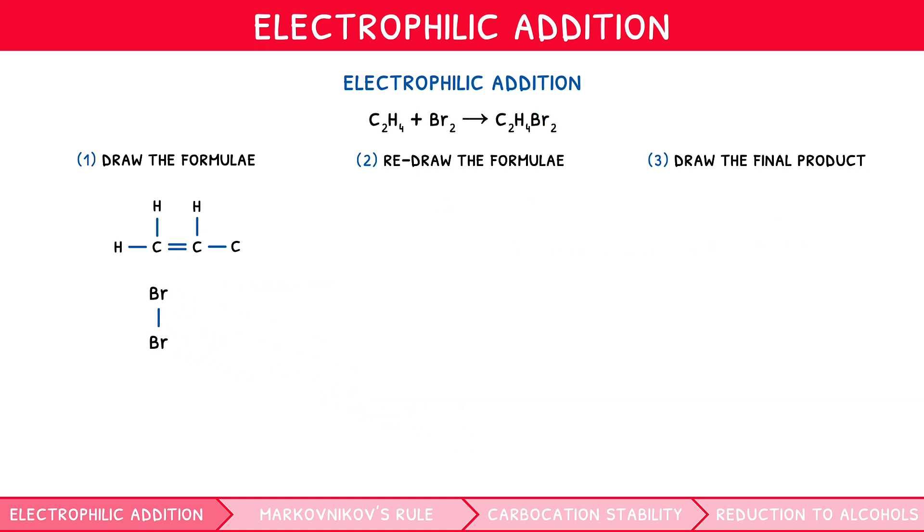Well, let's consider ethene reacting with diatomic bromine. As the halogen approaches the double bond, the higher electron density pushes the electron density of the interhalogen bond towards the furthest halogen, inducing a dipole. We can signify this using a dotted arrow alongside the interhalogen bond. This allows the closest halogen to act as a delta-positive hydrogen, and the further like the halogen.